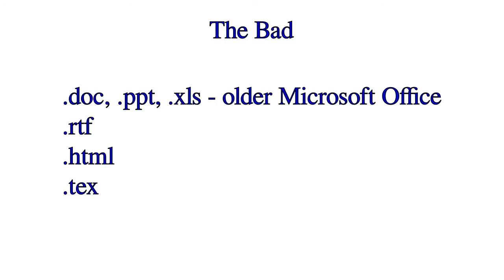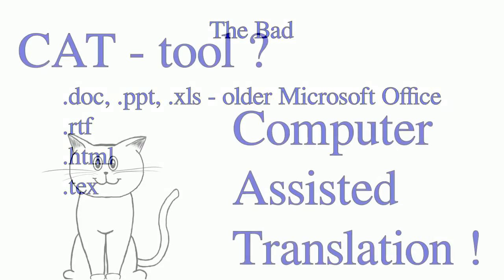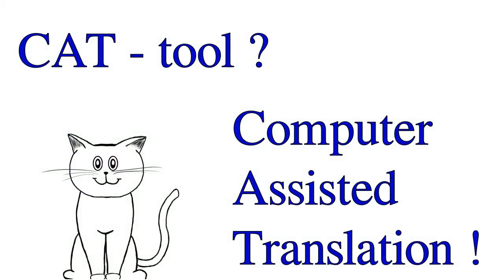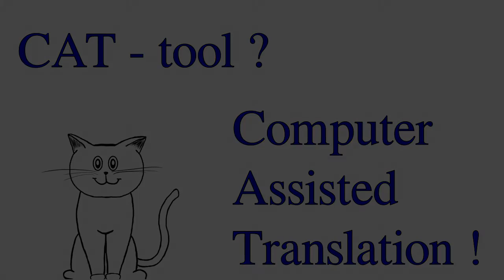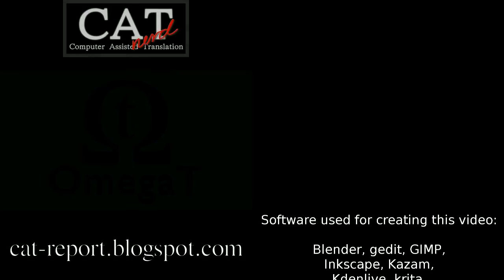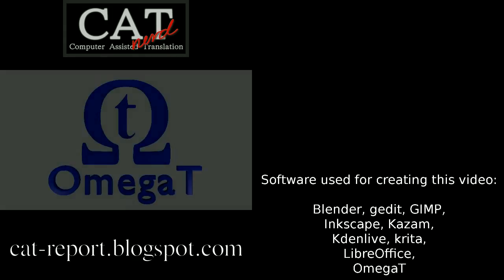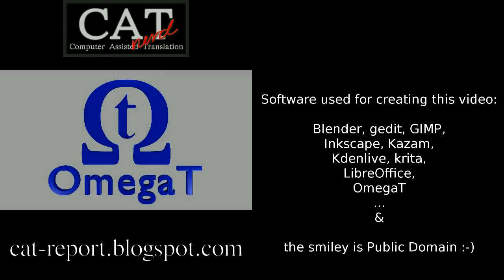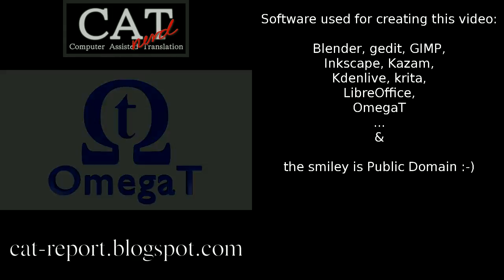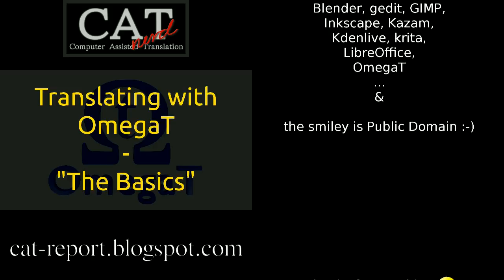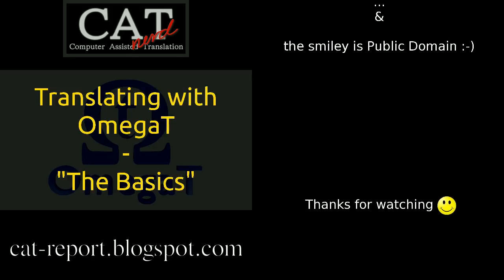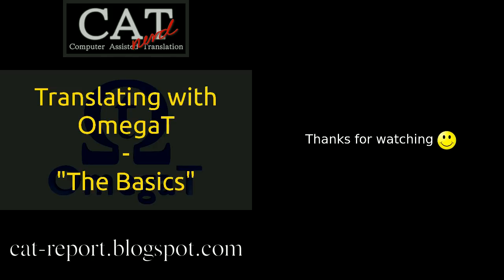Then there are some file formats that may work, but it is better to convert them first into a better supported format. That's it. This was a very brief introduction to computer-assisted translation, and now you should have an idea how CAT tools might help when translating with your computer. If you're interested, check out the next tutorial, which will be slower as we go into the details, and especially into working with OmegaT. Bye-bye!